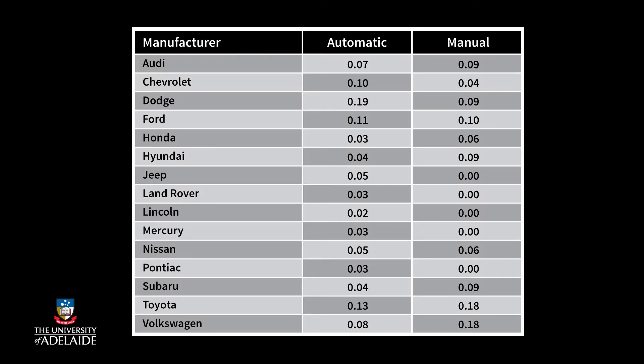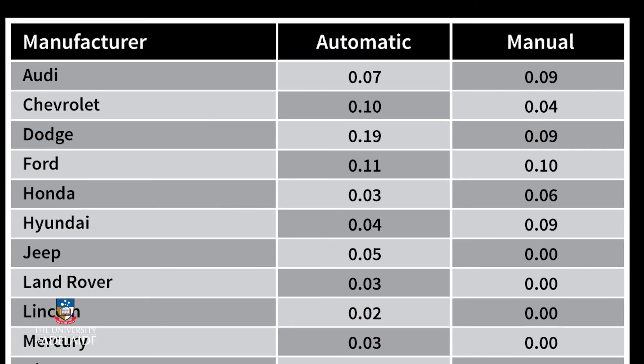We can also flip the condition and ask what proportion of automatics are Audi's. In this case, we total down the columns and then divide the contingency table by the marginals to give that 7% of automatics are Audi's and 9% of manuals are Audi's.